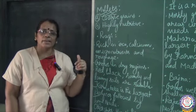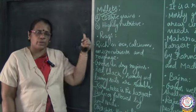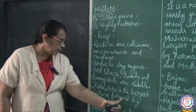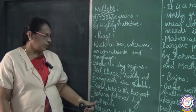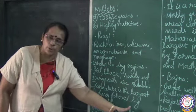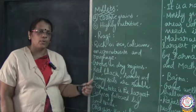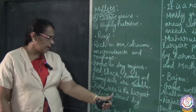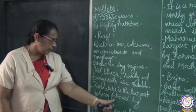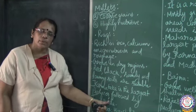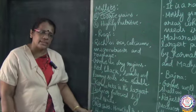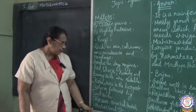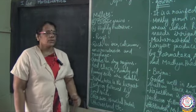When you talk about the largest producing state of ragi, Karnataka is the largest producer, followed by Tamil Nadu. Ragi can also be cultivated in other states such as Himachal Pradesh, Uttarakhand, etc.